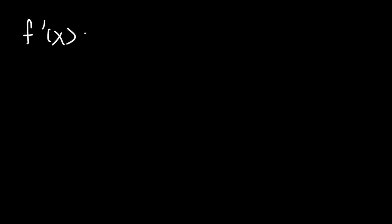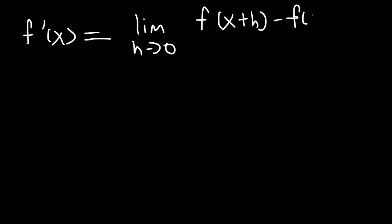In this video we're going to talk about how to find the derivative using the definition of the derivative formula. We need to find the derivative of a function using the limit process. f prime of x represents the derivative of f of x and it's equal to the limit as h approaches 0 of f of x plus h minus f of x divided by h. That's the formula we need to use.